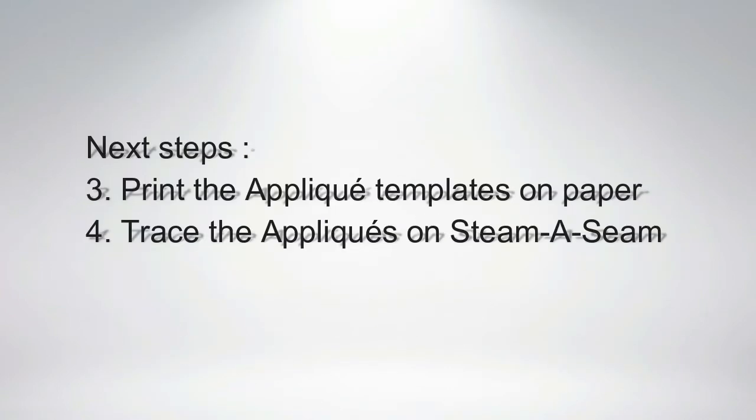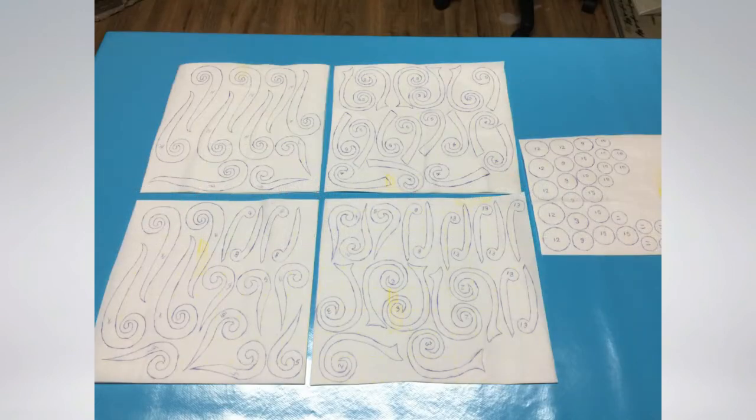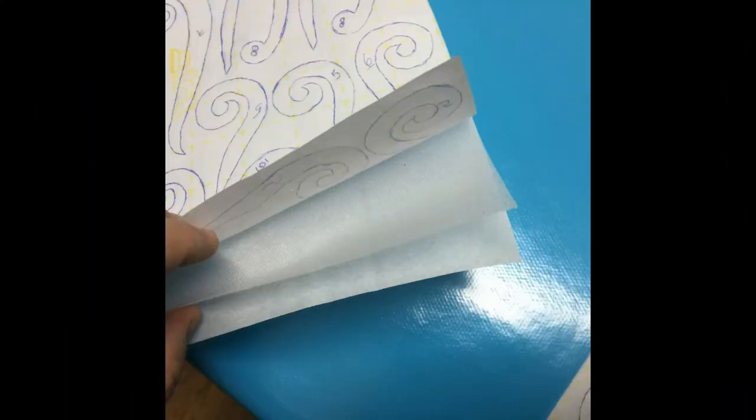To continue the process print the other set of applique templates on paper and then trace them on steamer seam. As mentioned before the steamer seam is a fusible web sandwiched between two protective sheets.